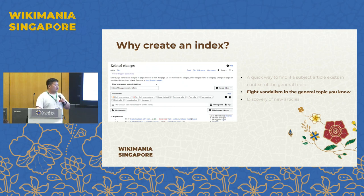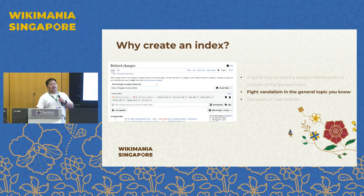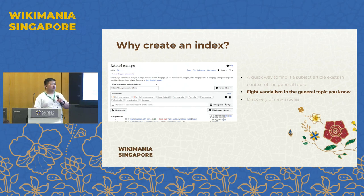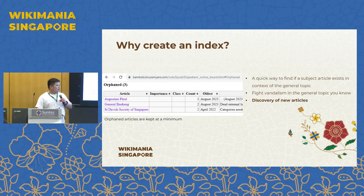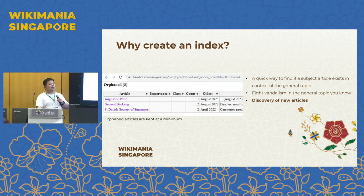The second reason is to fight vandalism in the topic you're monitoring. What me and my fellow Singaporean editors do is use the 'related changes' feature on the index article itself. This index currently stands at 12,000 to 13,000 on-page links, so we are monitoring almost every Singapore-related article on English Wikipedia. Once a vandalism edit comes in, it serves the same function as a watchlist — except it's a predefined watchlist for everyone.